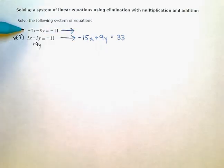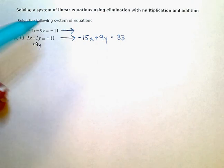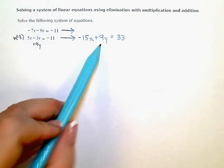Now the top equation, I already have an exact opposite here. Right? Negative 9y is the exact opposite of positive 9y.